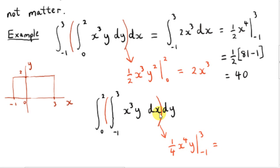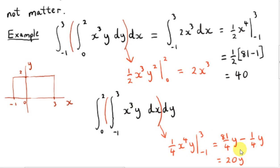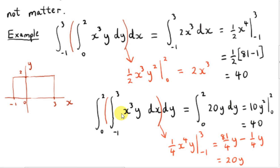We're integrating with respect to x, so we plug 3 in for x, and subtract what we get when we plug minus 1 in for x. Minus 1 to the power of 4 is plus 1, so we get minus a quarter y, and 80 over 4 times y, which is 20y. The inner integral is 20y, and integrating 20y with respect to y from y equals 0 to 2 gives us 10y squared from 0 to 2, which is 40 — the same answer regardless of the order of integration.